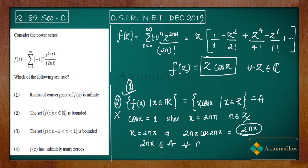Let us recap: we are given this set and the question asks whether it is bounded. Using f(z) = z·cos(z), we substitute x = 2nπ, and the element inside the set becomes 2nπ itself. Since 2nπ is unbounded, the set is not bounded. So Option 2 is incorrect.